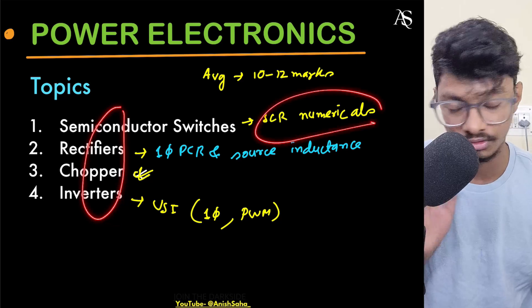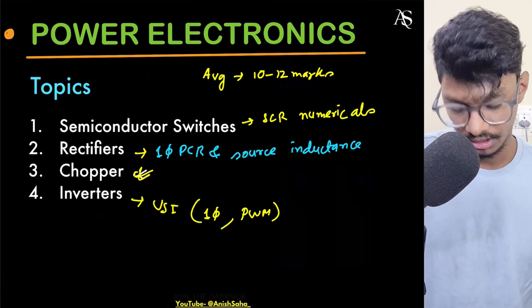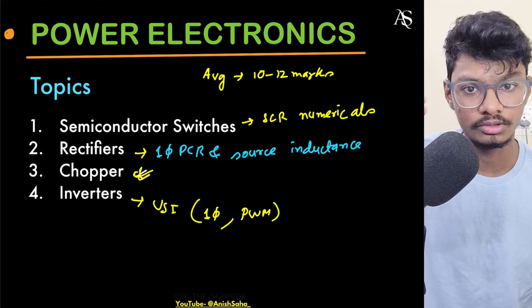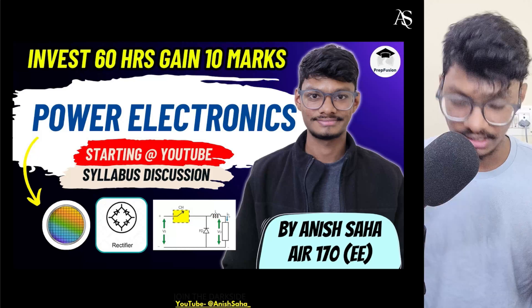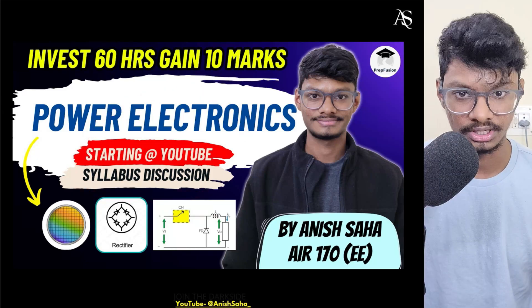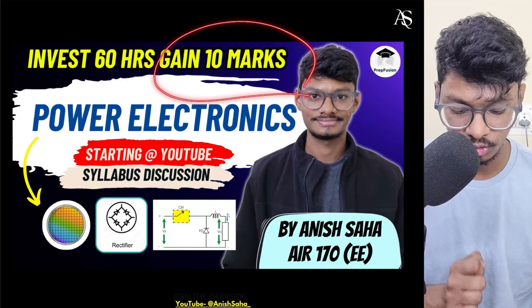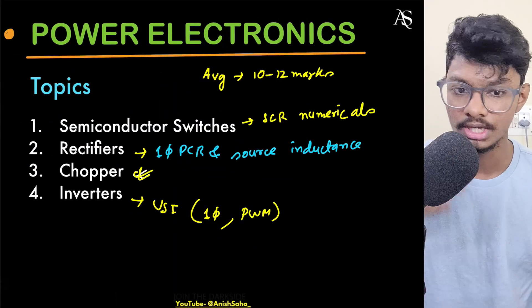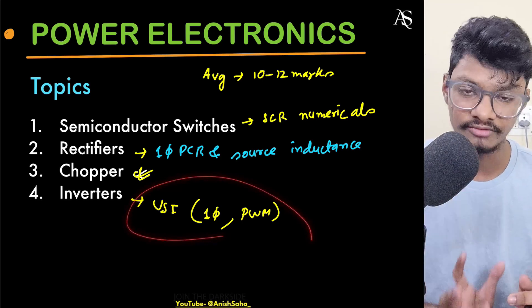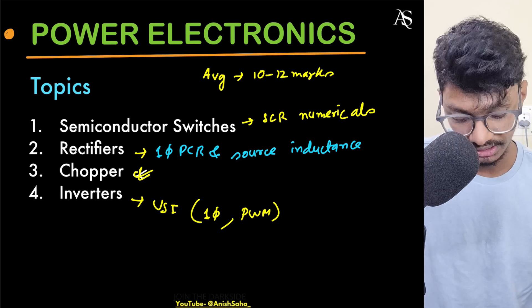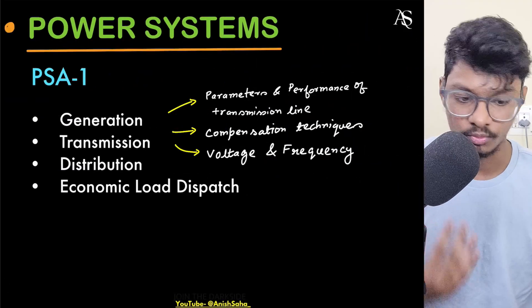Out of the four Power Electronics chapters, I have explained which are the most important ones. If you study from my course, you won't find anything difficult — I have covered it in just 60 hours in a lucid manner, available on our website at under thousand rupees. If studying from elsewhere, the parts I mentioned as skippable may be difficult, so you can skip those.